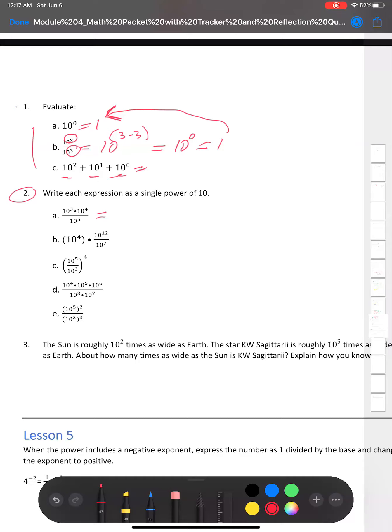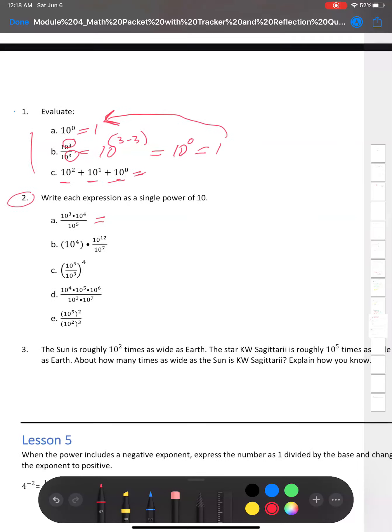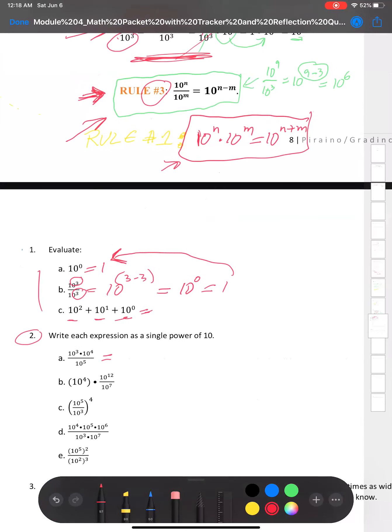So we have 10 to the third power times 10 to the fourth power. Now remember rule number one. When we are multiplying two powers of 10, we're going to add the exponents. So we're going to have 10 to the third plus four divided by 10 to the fifth power. There's nothing happening on the bottom, we're just going to carry it over. And that's equal to 10 to the seventh power divided by 10 to the fifth power. So up here we actually used rule number one.